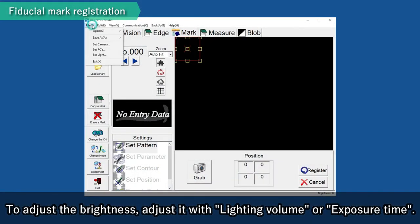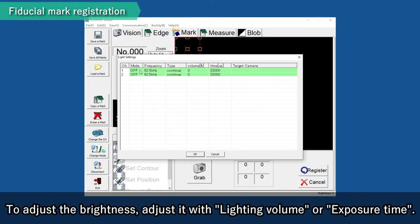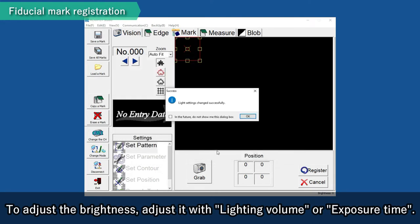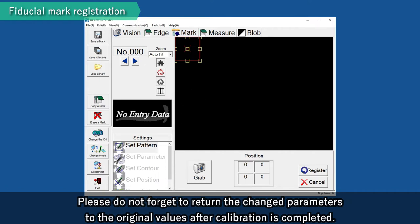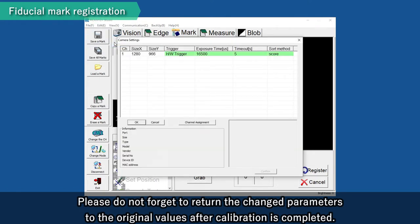Do not touch the focus or diaphragm of the lens that was adjusted for the actual workpiece. To adjust brightness, adjust it with lighting volume or exposure time. Please do not forget to return the changed parameters to the original values after calibration is completed.